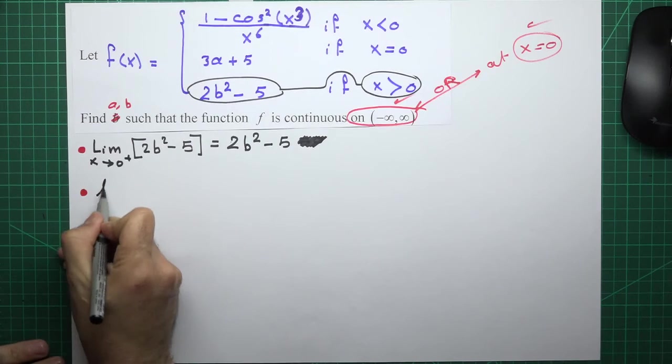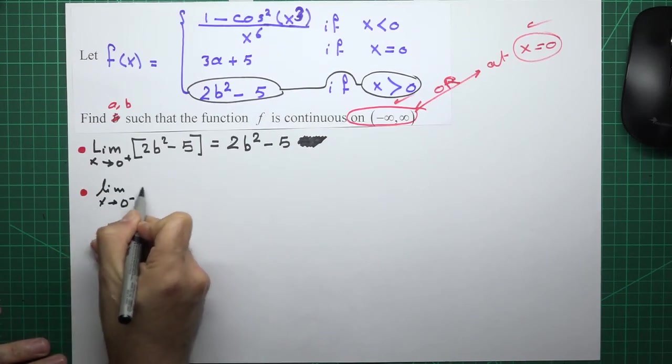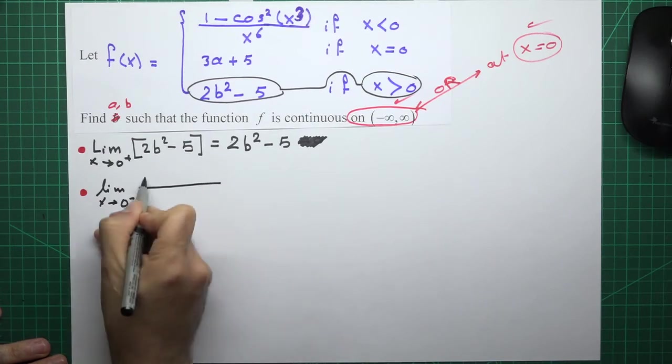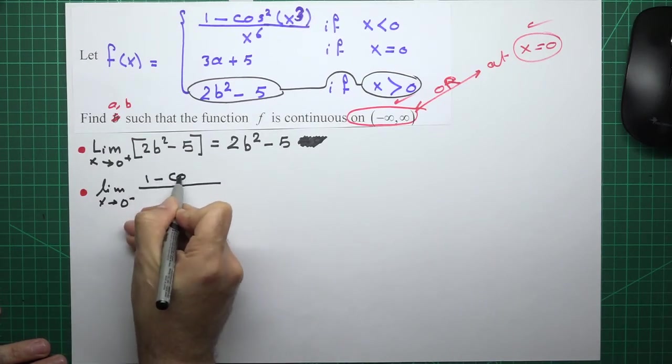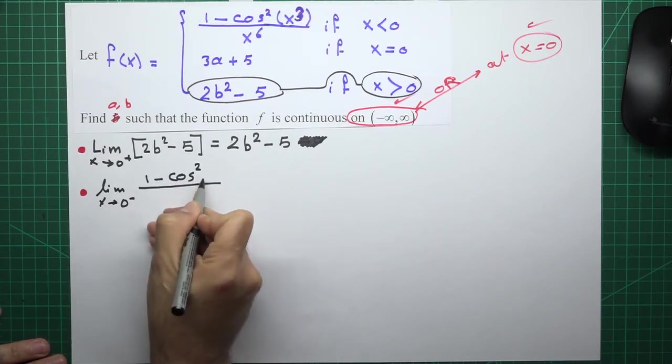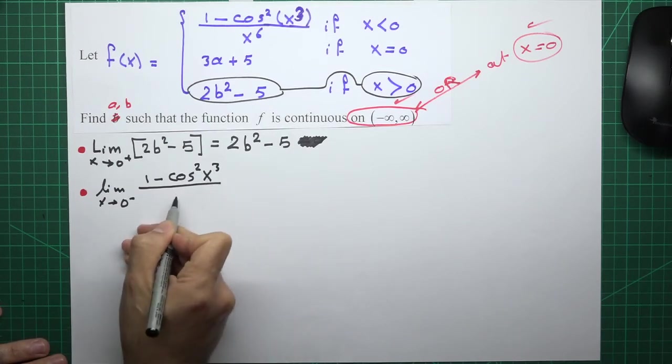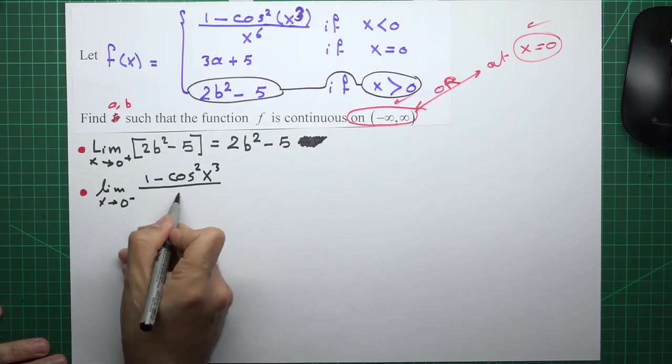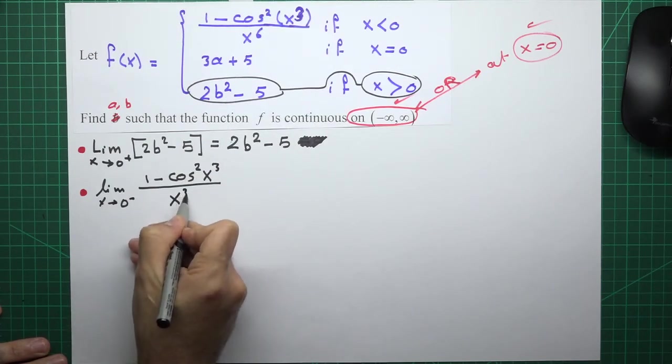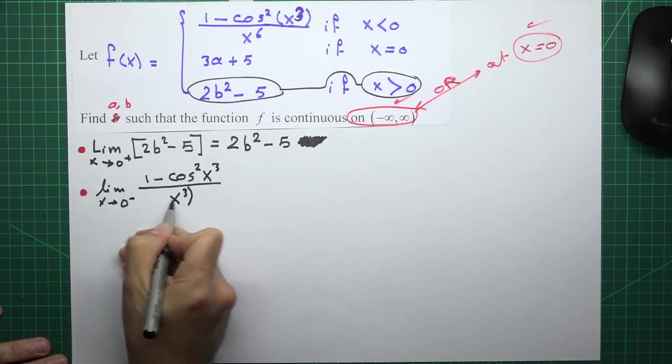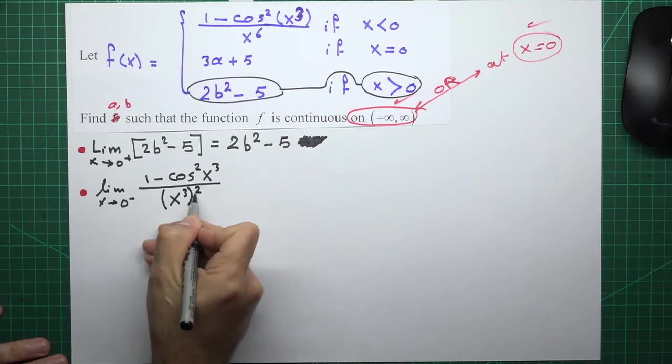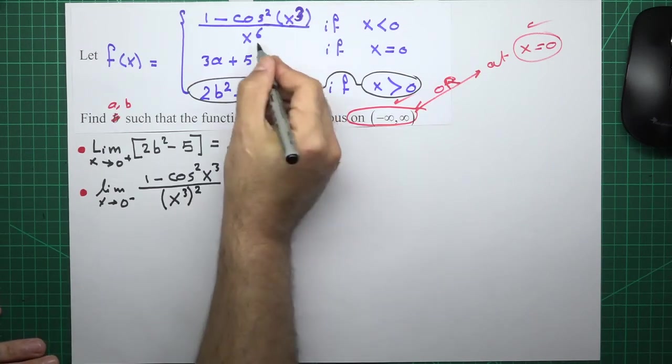Let's look at the limit: (1 minus cosine squared of x cubed) over x to the 6. Let me write x cubed like the angle but squared. It's the same, cubed squared is to the 6.